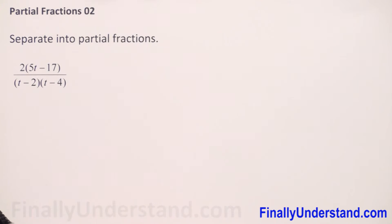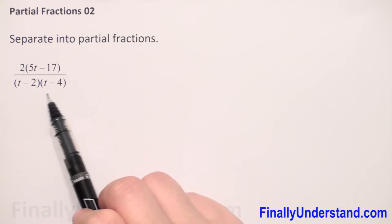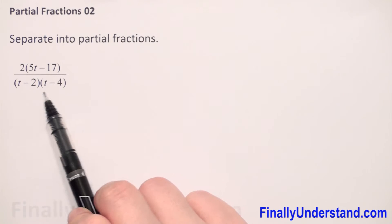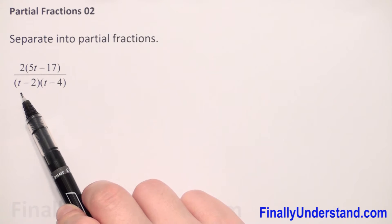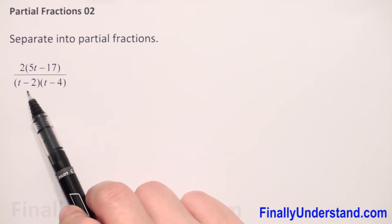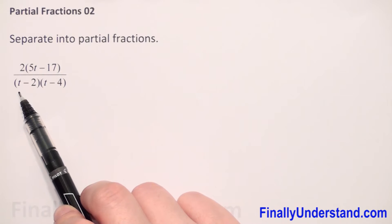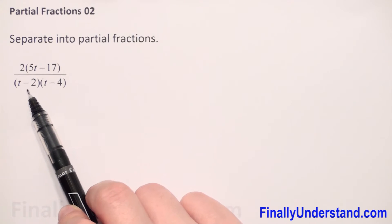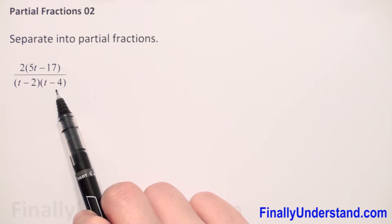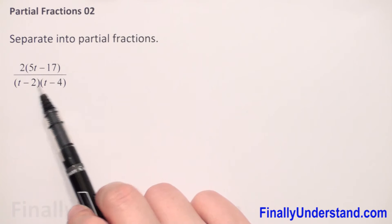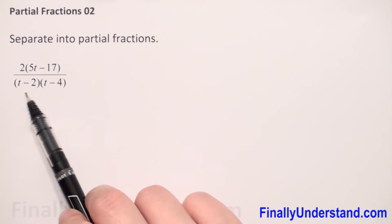The next step is to check the denominator — we have to factorize it. But in this example it is already factorized. So we check our factors: we have (t minus 2) and (t minus 4). These are different factors and they are linear factors.